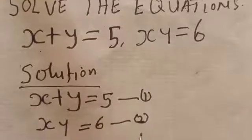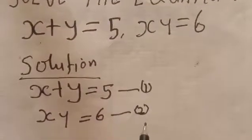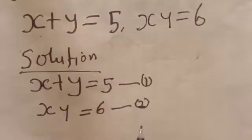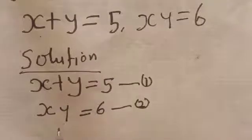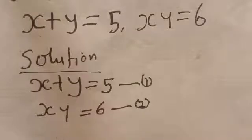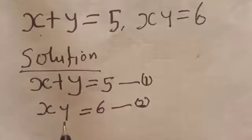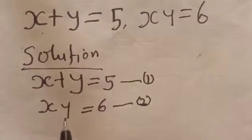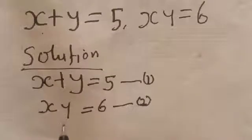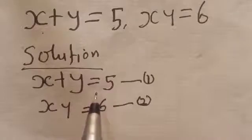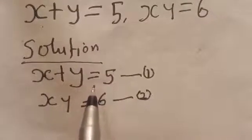We want to look for the value of x and y. From our first equation — you can use any of the two equations — either from equation one or the second equation, you may make x the subject of the formula or y the subject of the formula and get your answer. From equation one, x plus y is equal to 5, and we want to make x the subject of the formula.